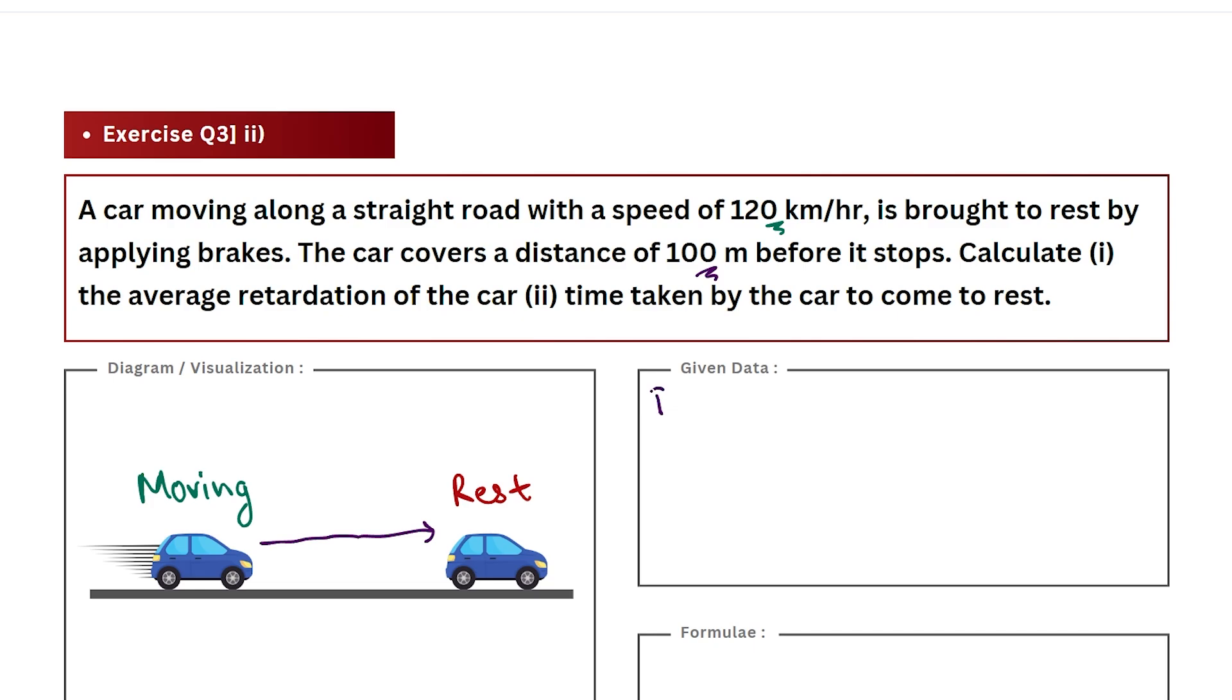First of all, let us quickly list down all the given data. First, the initial speed, which we represent using the letter U. That is given to us as 120 km per hour. In this question, we are going to convert all quantities to SI units, so our speed becomes 120 times 5 by 18 meter per second. The final value comes out to be 100 by 3 meter per second. This is our value of initial velocity or speed.